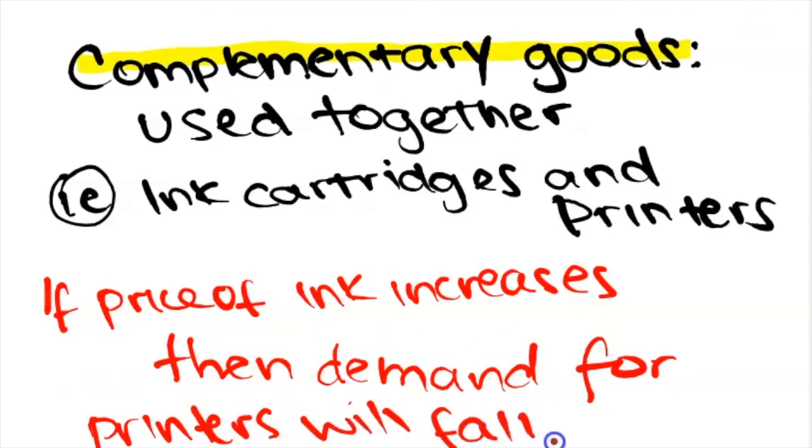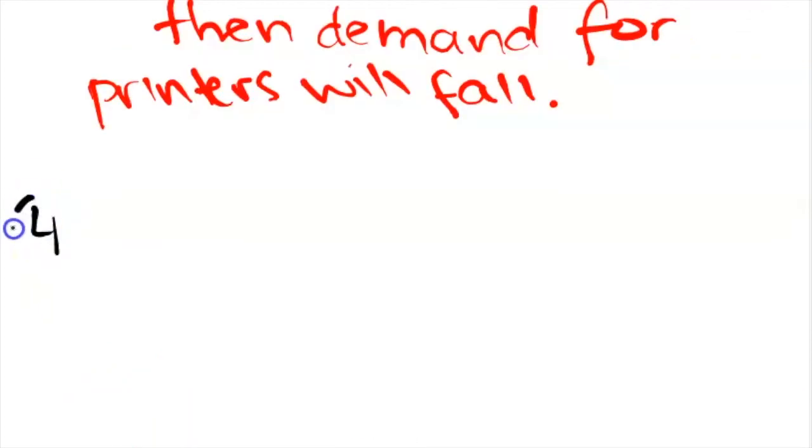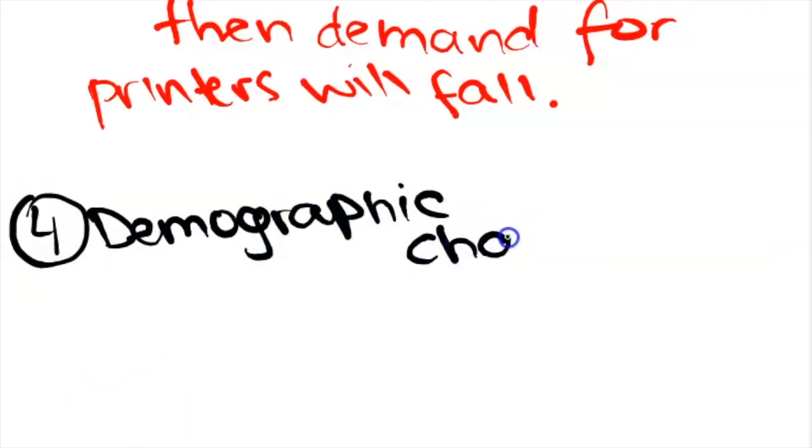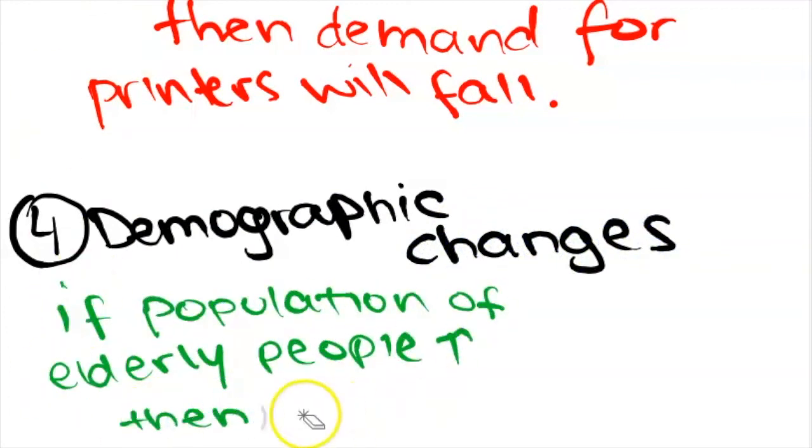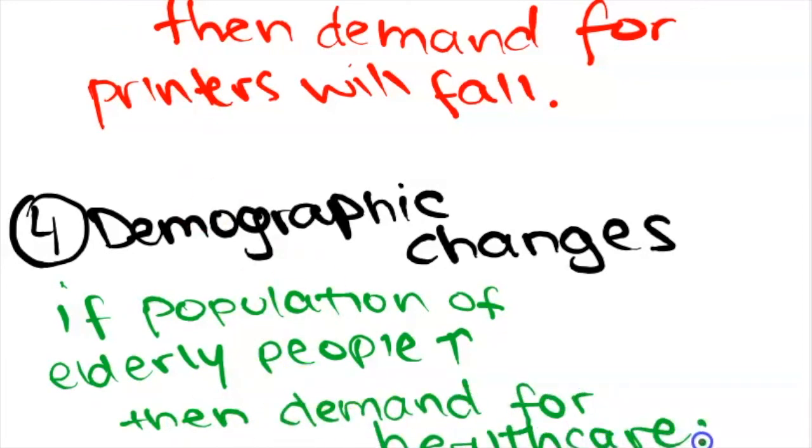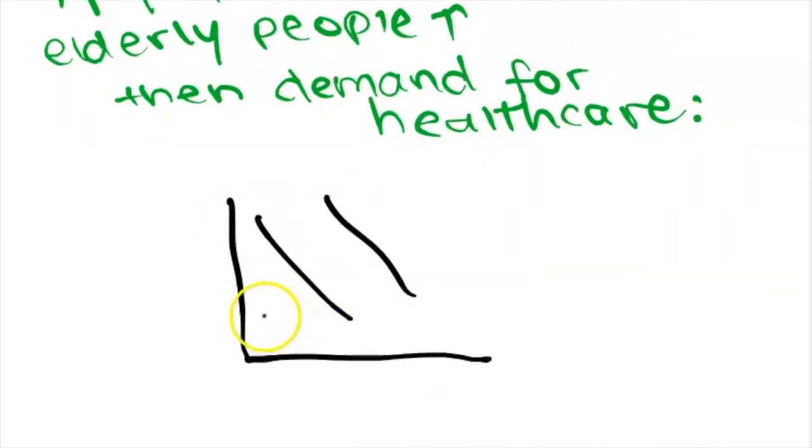The last determinant of demand that we will be looking at is demographic changes. For instance, over time, the population of elderly people might grow. Therefore, this can create a greater grey market or grey economy. If there's an increase in the population of elderly people, we might expect there to be an increase in the demand of healthcare services or adult diapers.